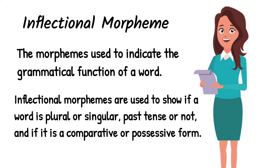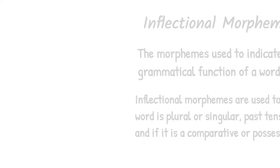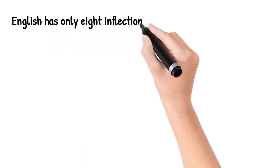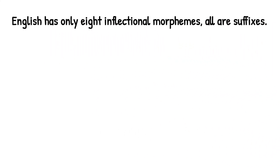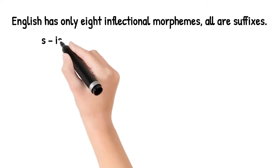It's called an inflectional morpheme. The main function is to indicate the grammatical function of words. In the English language, there are only 8 inflectional morphemes in total. These are 8 suffixes — bound morphemes which are used at the word's end. They are used to indicate grammatical function such as the plural form of nouns.